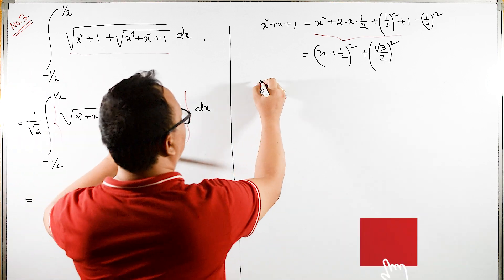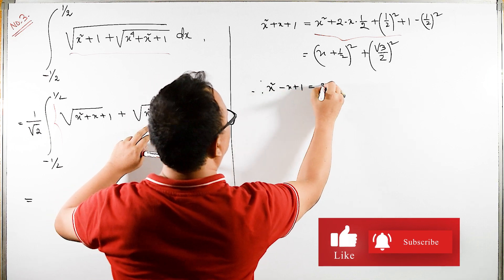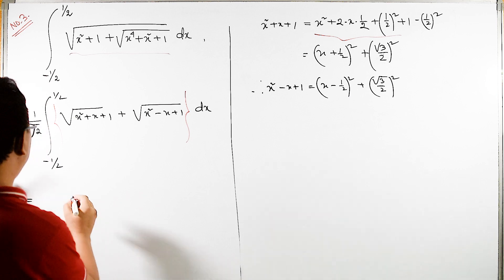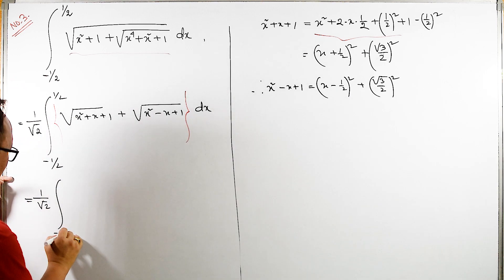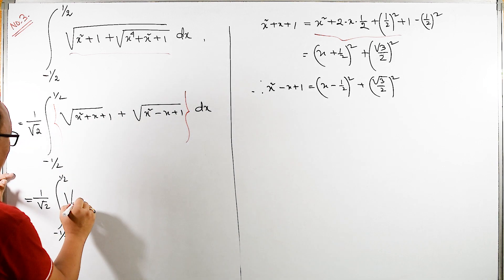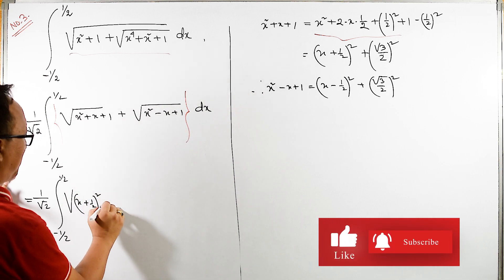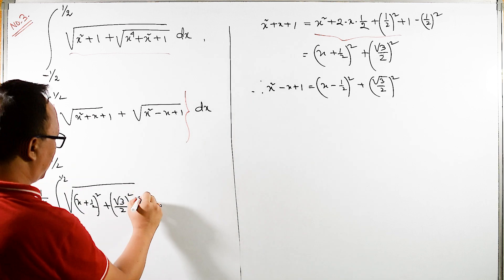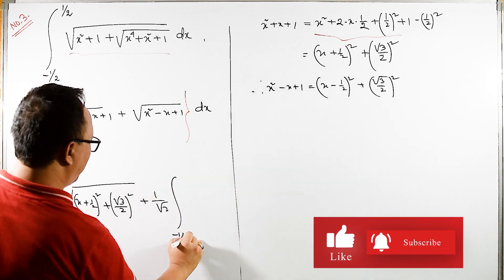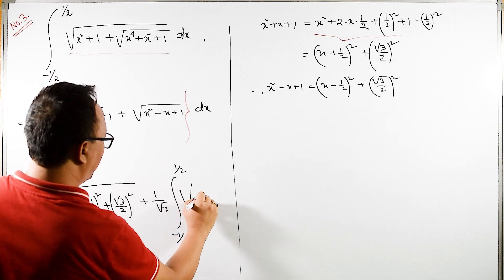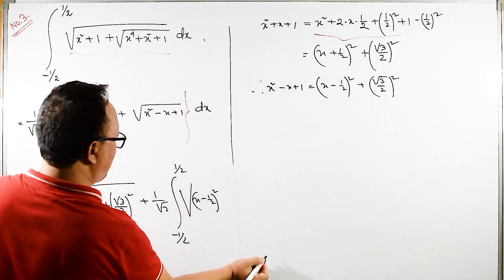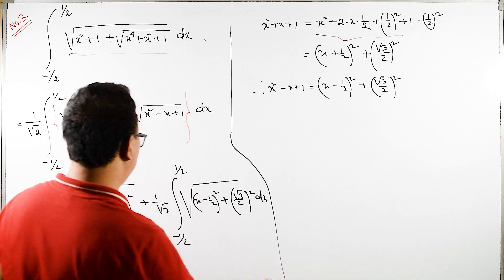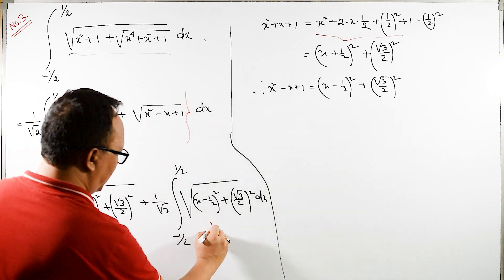Substituting back, the integral becomes (1/√2)·∫ from -1/2 to 1/2 of [√(x² + x + 1) + √(x² - x + 1)] dx. Completing the square: x² + x + 1 equals (x + 1/2)² + (√3/2)², and similarly x² - x + 1 equals (x - 1/2)² + (√3/2)². We separate this into integral I1 and integral I2.